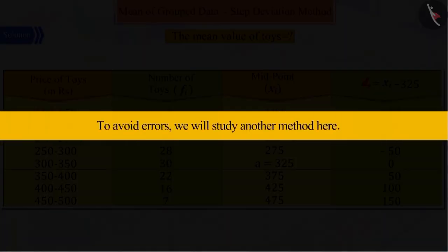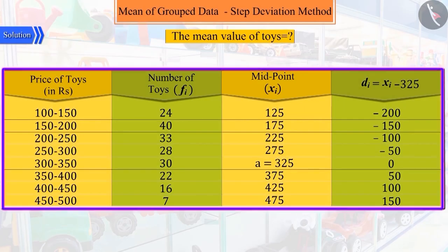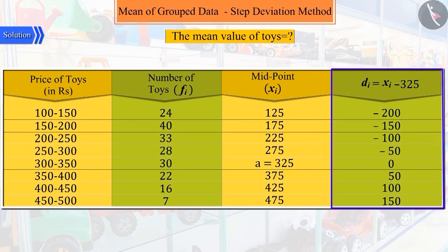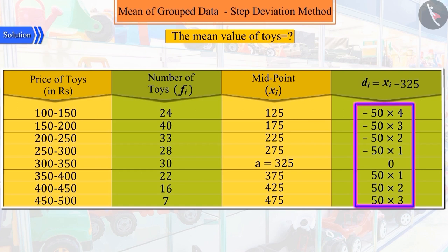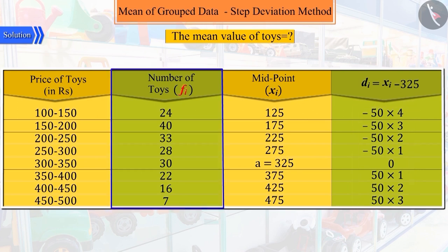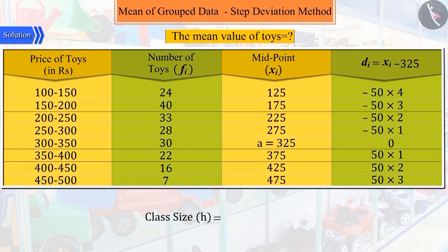Let's try to understand this. Looking at the table carefully, we can say that all the values of column 4 are multiples of 50. If all the values of column 4 are divided by 50, then we get smaller values to multiply with FI.